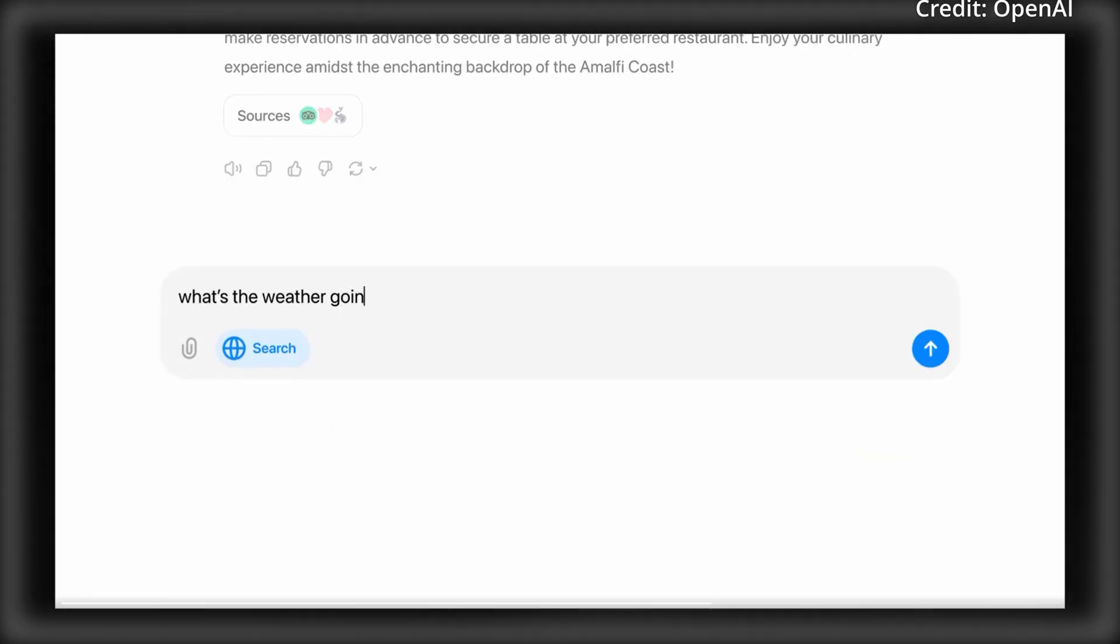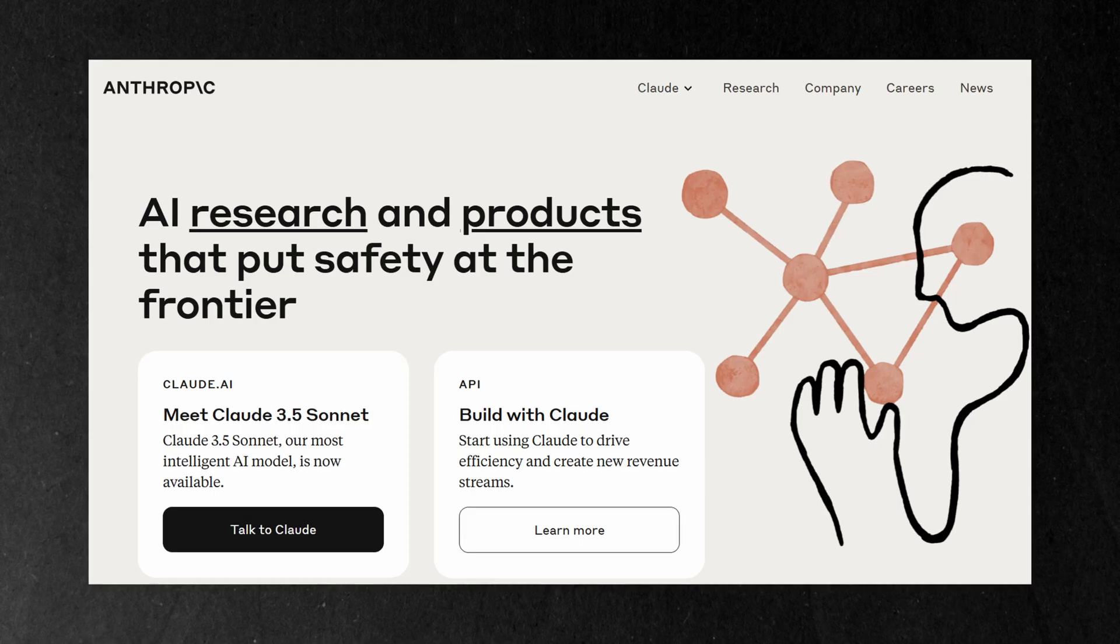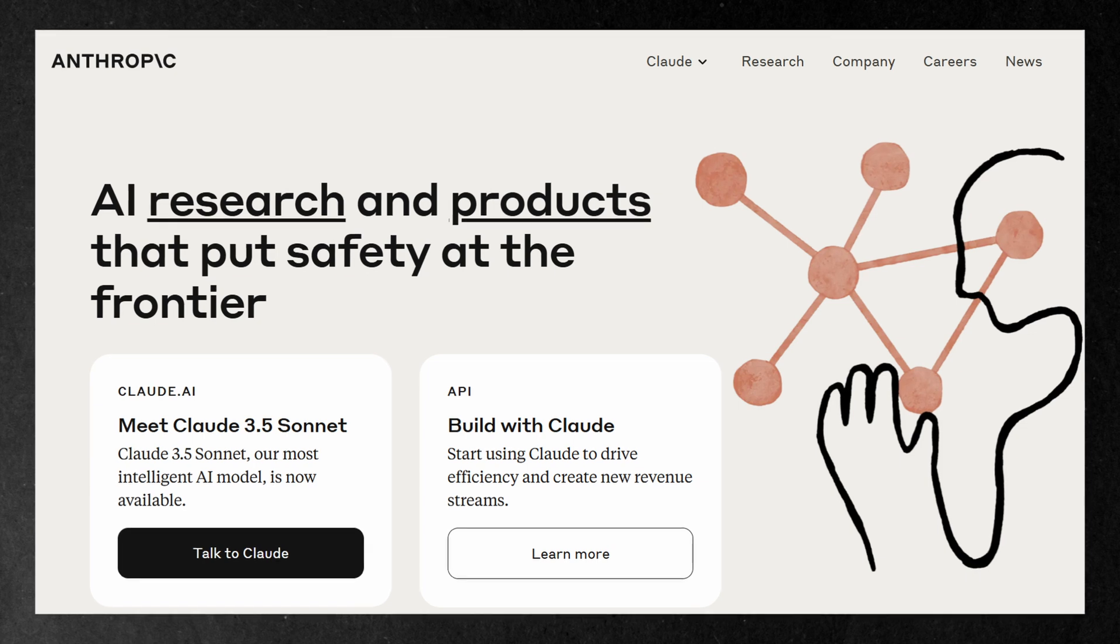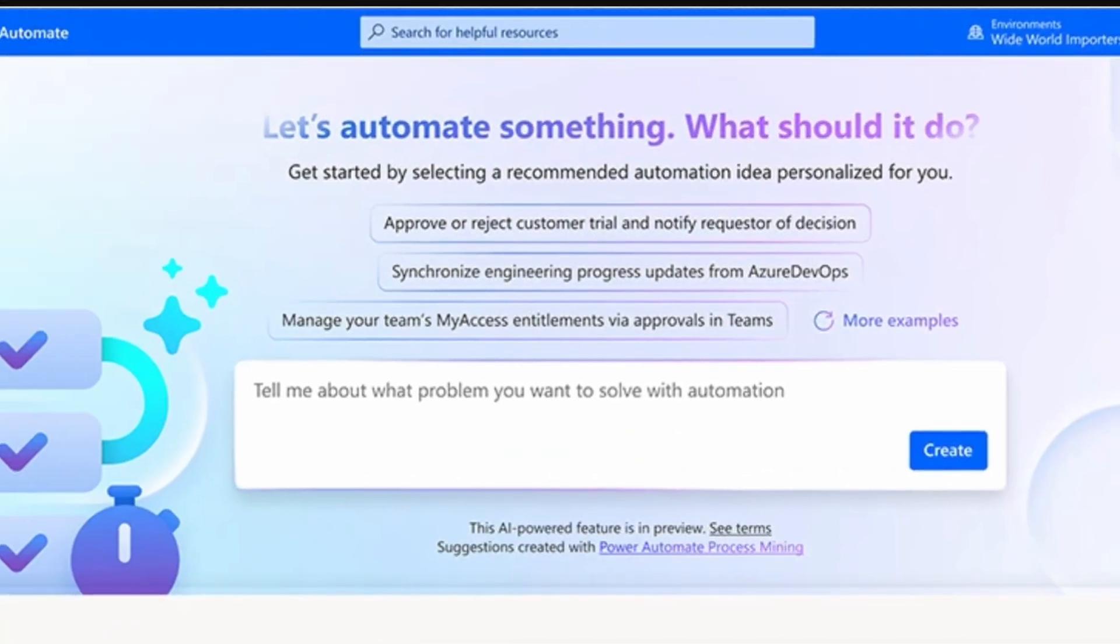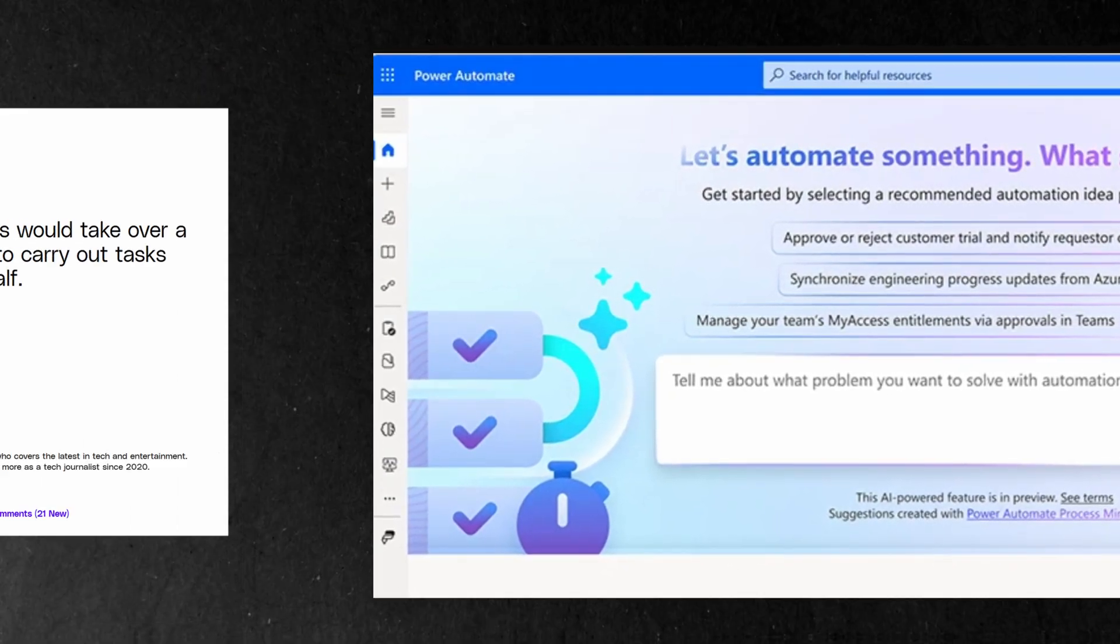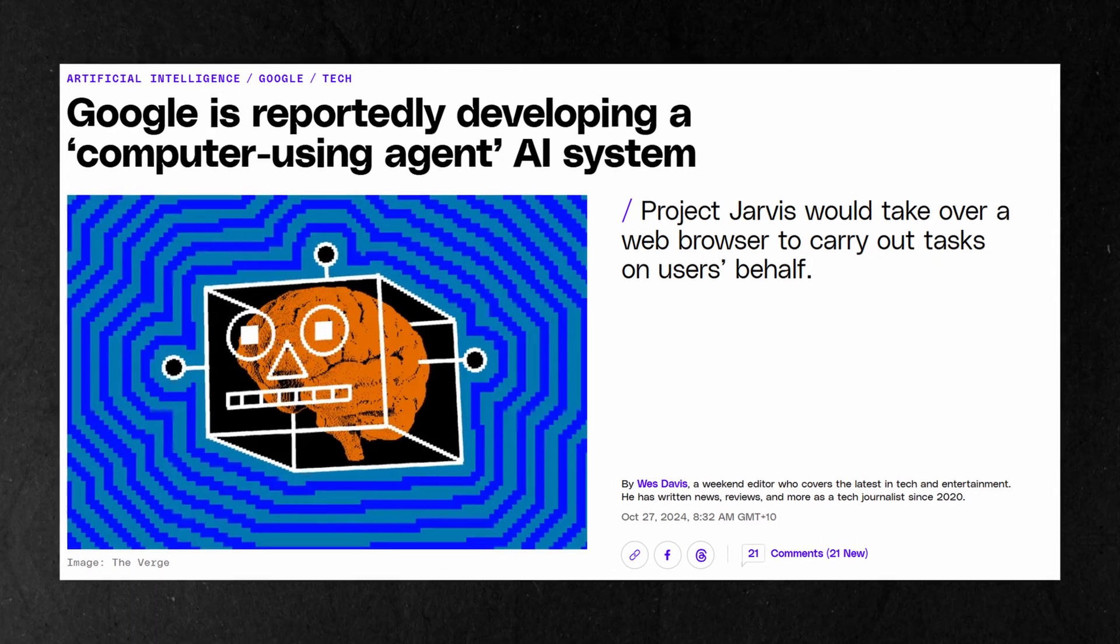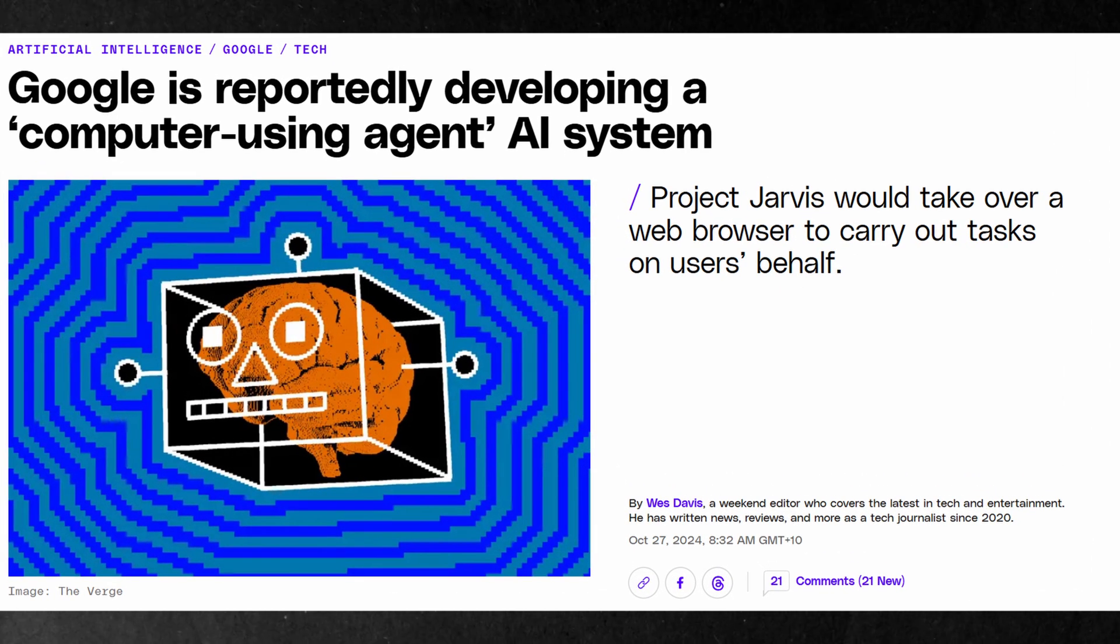But the development of such AI assistants is a growing trend across major AI labs, with Anthropic having already launched an assistant capable of processing screen content and executing real-time actions. To match, Microsoft also integrated similar automation features into its co-pilot platform, and Google is currently developing Project Jarvis, which is a Chrome-based AI assistant set to launch with its new Gemini language model at the end of 2024.